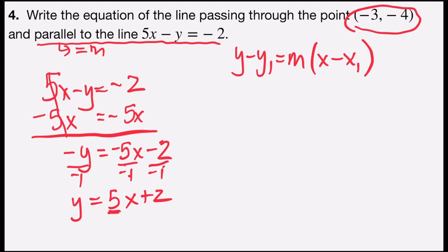That means the slope of the given line is 5, and the slope of any line parallel to it is also 5.